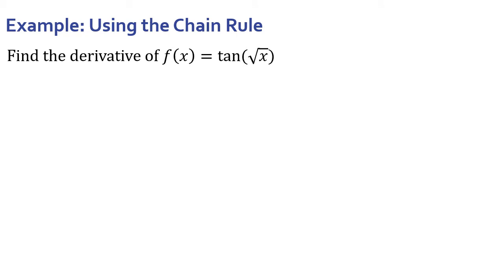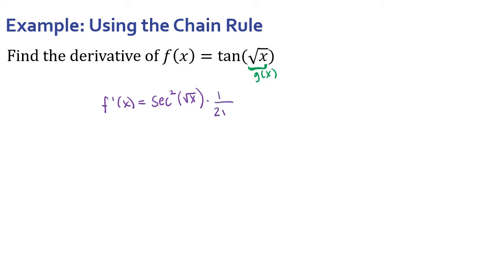Let's look at another one. Here our inside function g(x) is the square root of x, and our outside function is tangent of x. If I were to find this derivative using the prime method, it's the derivative of the outside function — secant squared — evaluated at the inside, times the derivative of the inside function, which is 1 over 2 root x.